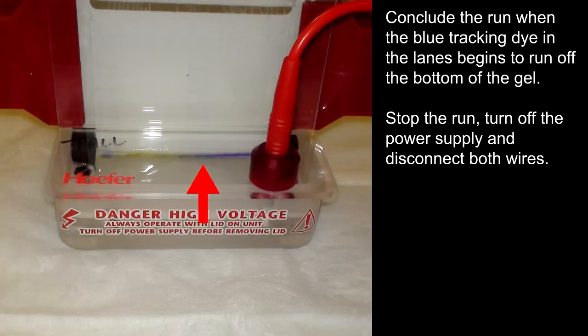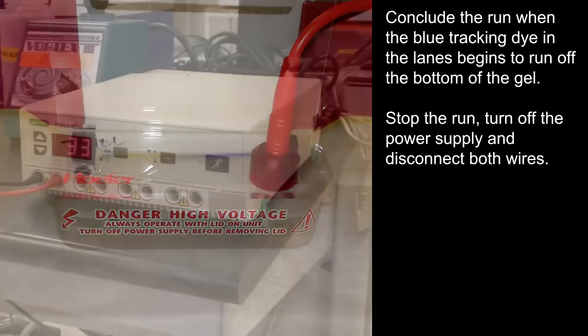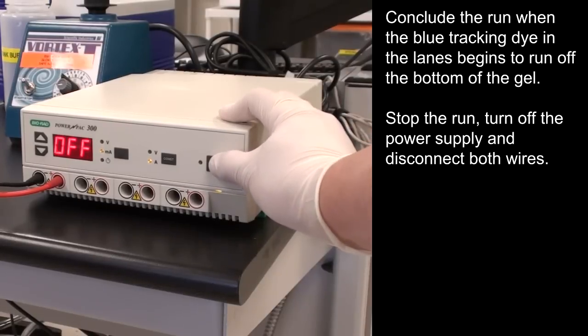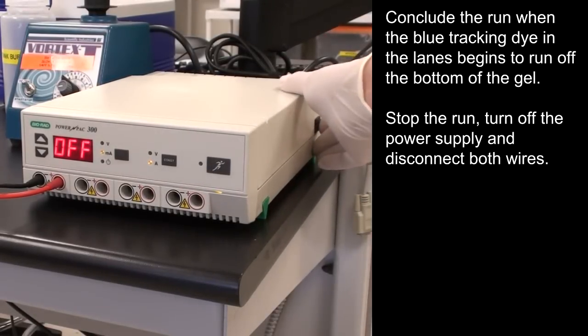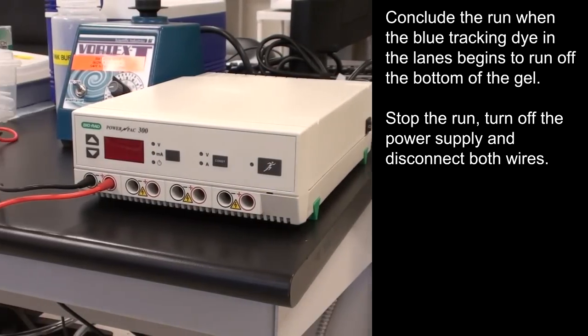Conclude the run when the blue tracking dye in the lanes begins to run off the bottom of the gel. Stop the run, turn off the power supply, and disconnect both wires.